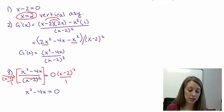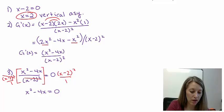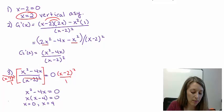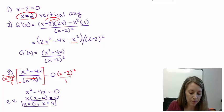Now I need to solve this equation. It's a degree 2 equation, so I'll solve it by factoring. Factor out a common factor of x, which leaves me with x minus 4. Setting this equal to 0 gives me x equals 0 and x equals 4. Those are my critical values, or CVs as I abbreviate them.